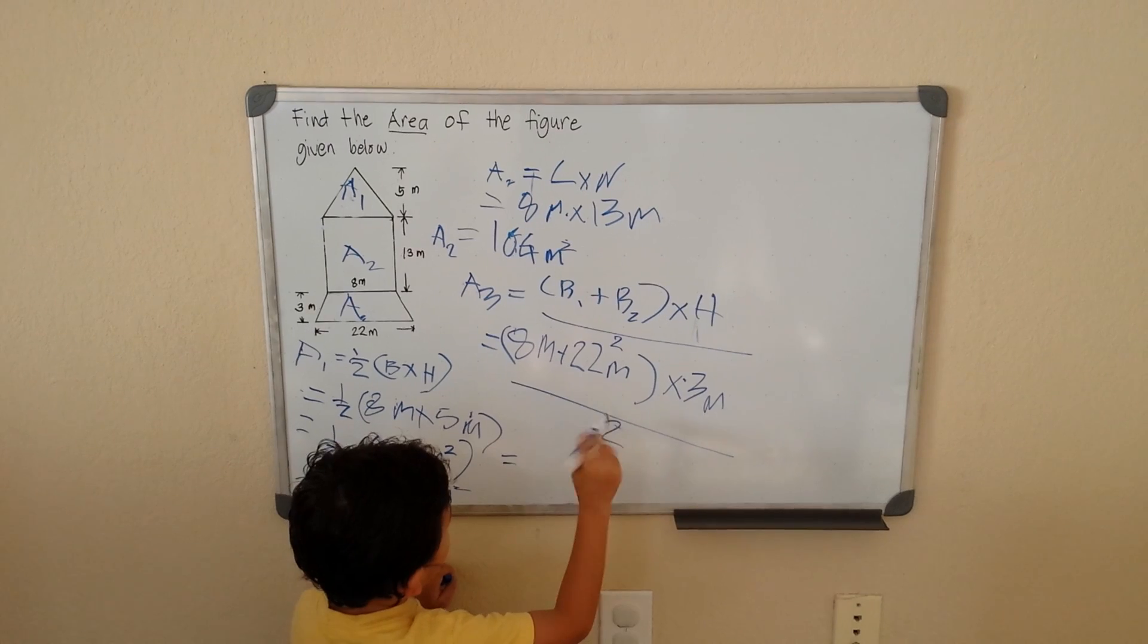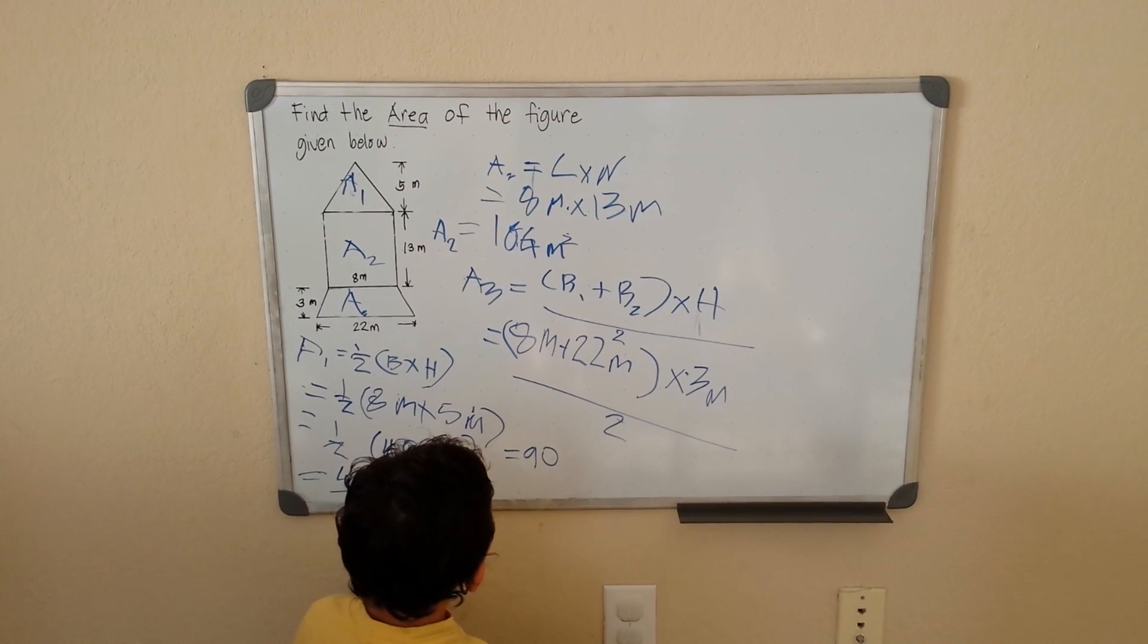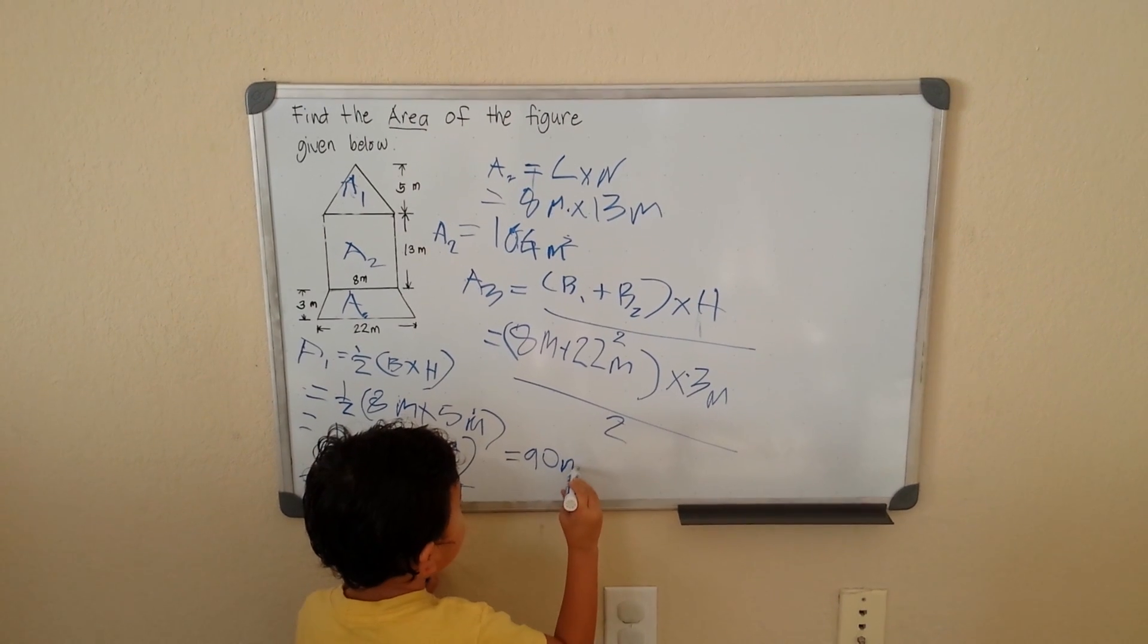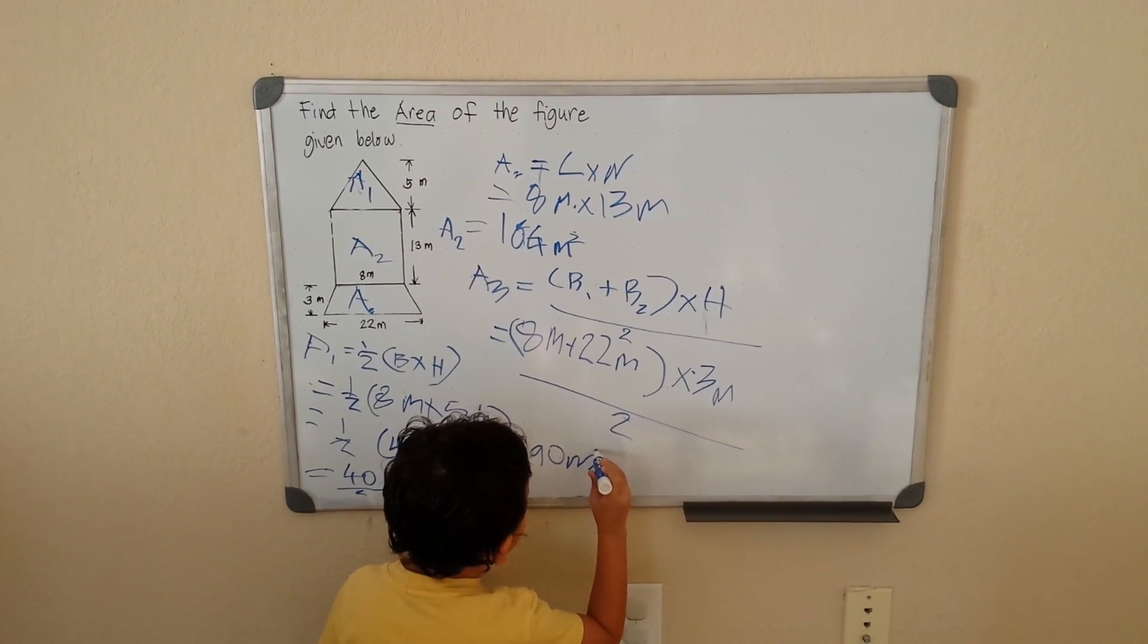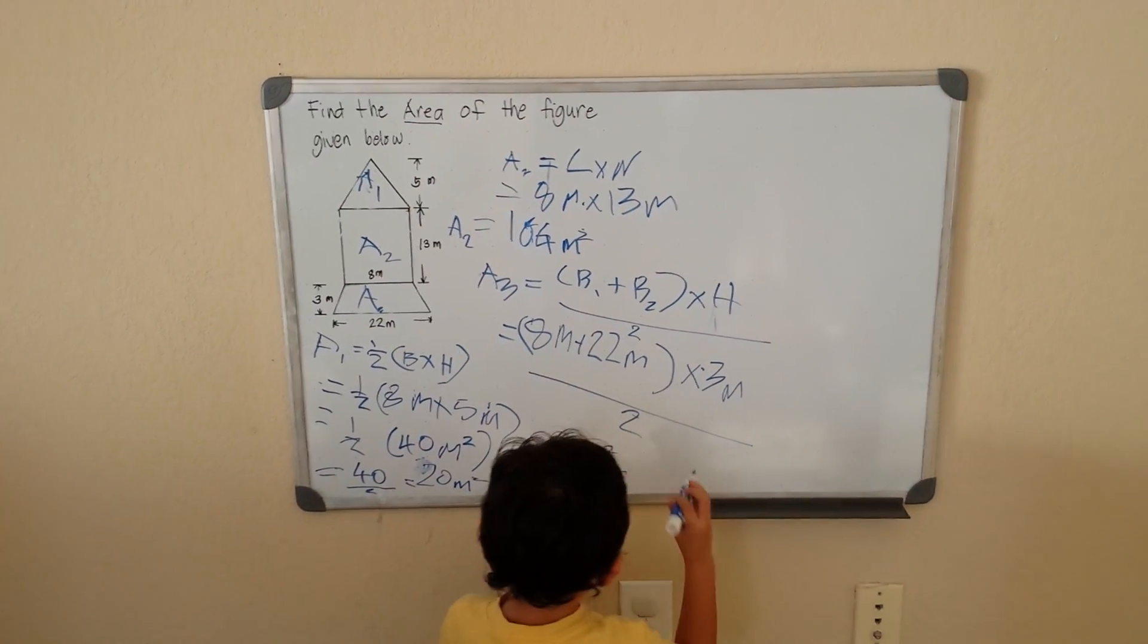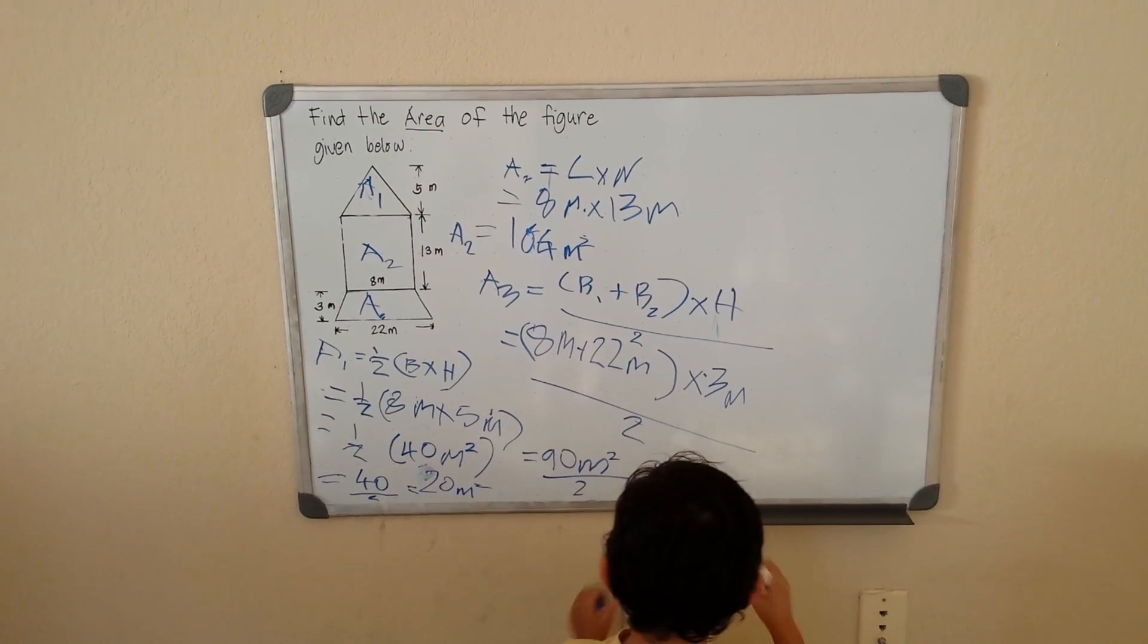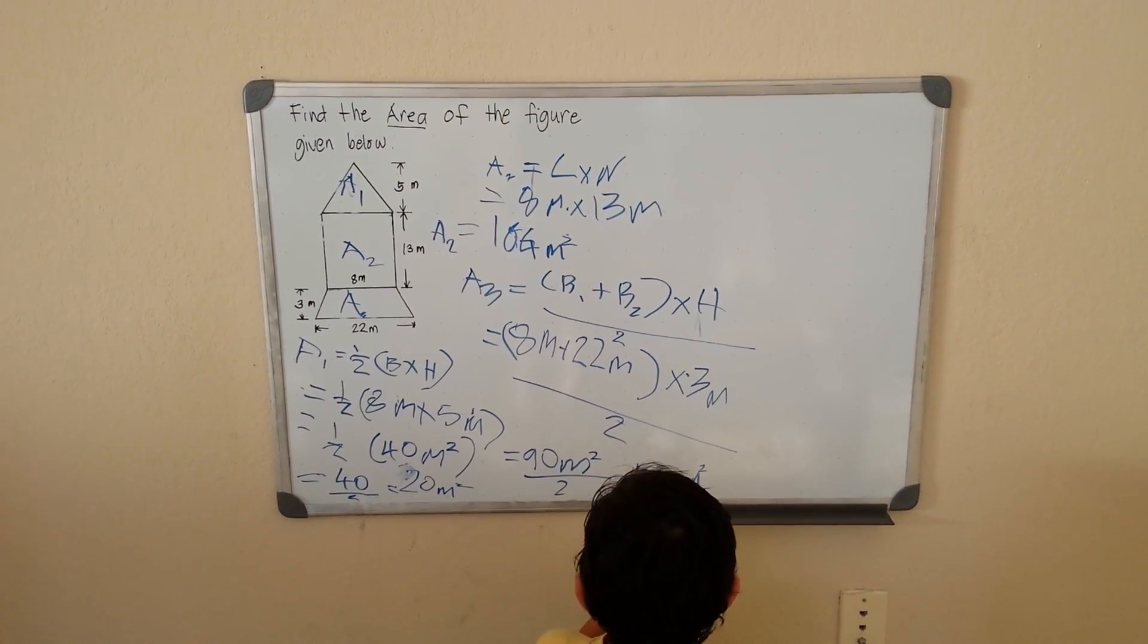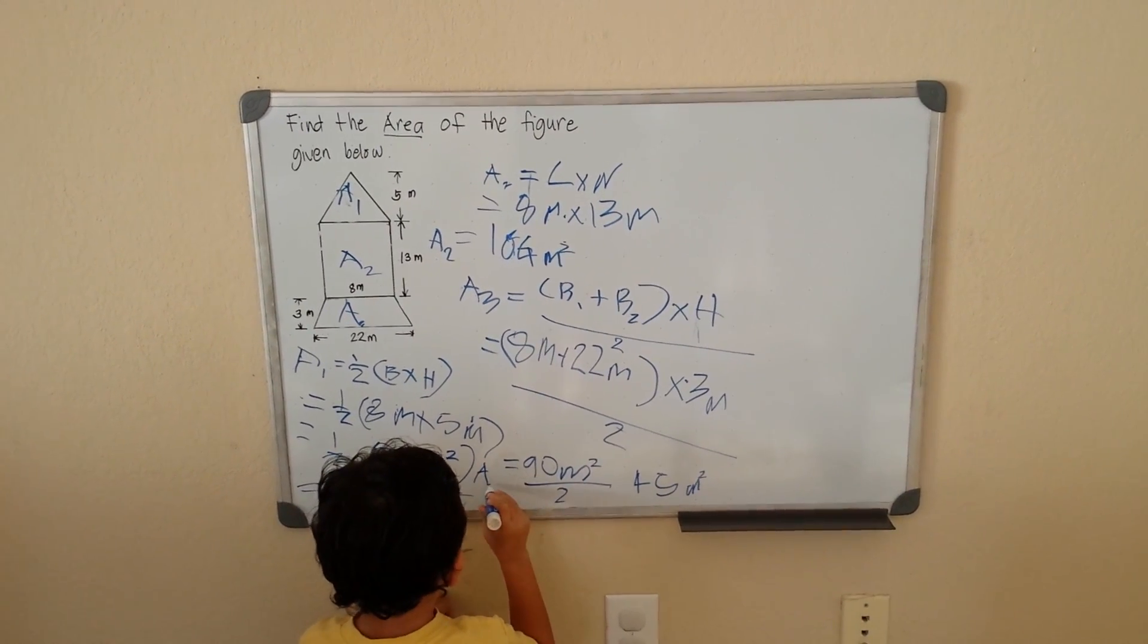We need to divide it by 2. So that gives me 90 divided by 2, which is 45 meters squared. So that is our area for the trapezoid.